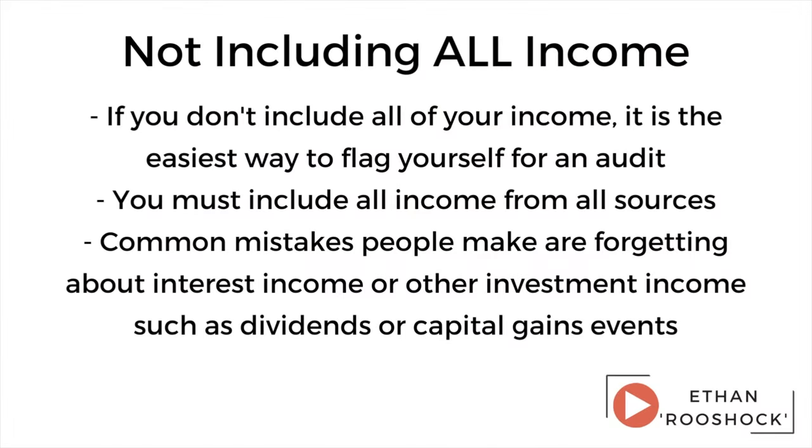The first one would have to be not including all income, and this happens quite typically when people are lodging early because not all the information has come through to the ATO. At the time of recording this, we've now gone past the 14th of July deadline when employers should have finalized their employees' earnings with the ATO. But there are other things you may be waiting on, such as interest income, rental property income, dividends, or capital gains events. You need to include income from all sources and you can't just rely on that ATO pre-fill.